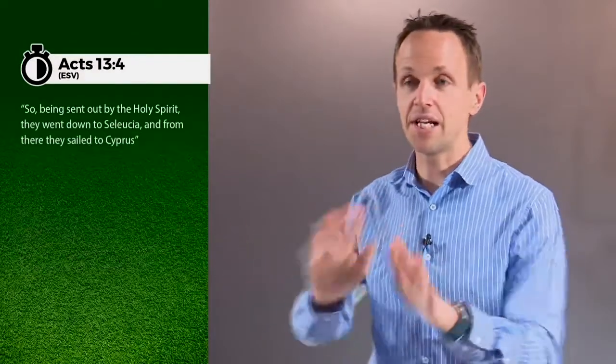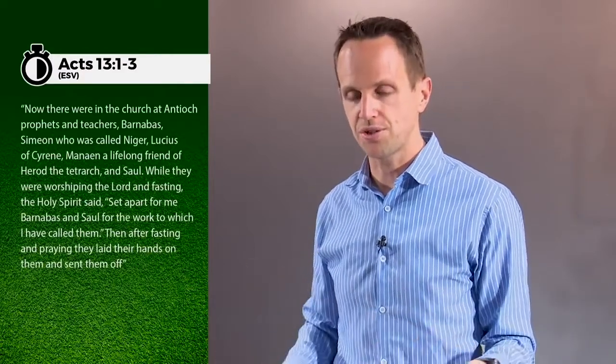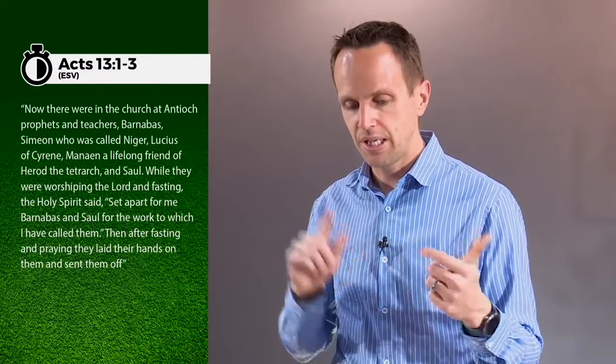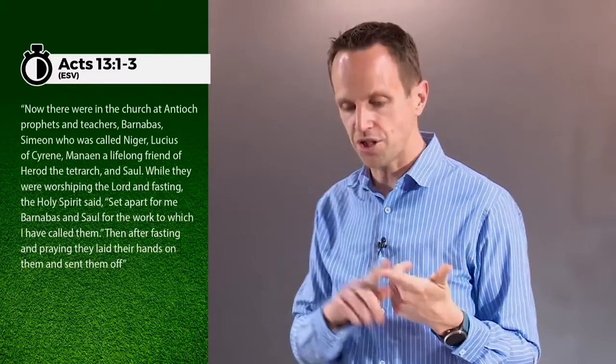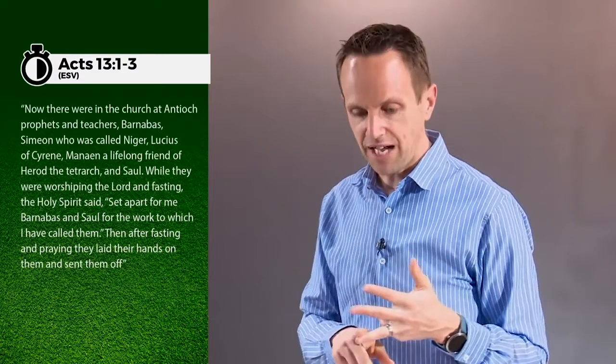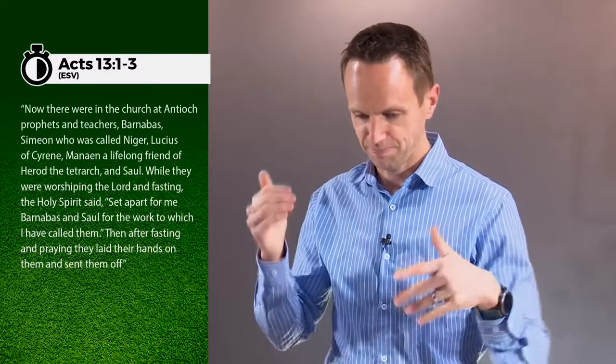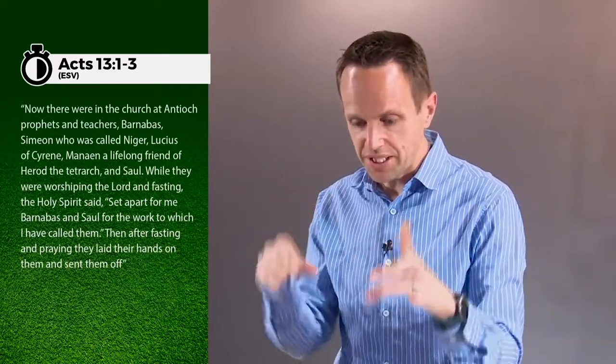So verse 1, it says this. It's a list of the leaders of the church, we presume, at Antioch. And it says, now, there were in the church at Antioch prophets and teachers, Barnabas, Simeon, who was called Niger, Lucius of Cyrene, and Manan, a lifelong friend of Herod the Tetrarch, and Saul, who became Paul. So we have a list of the very first leaders of the church. Some of them we know. Saul, who became Paul, and we know Barnabas. But who were those other guys?